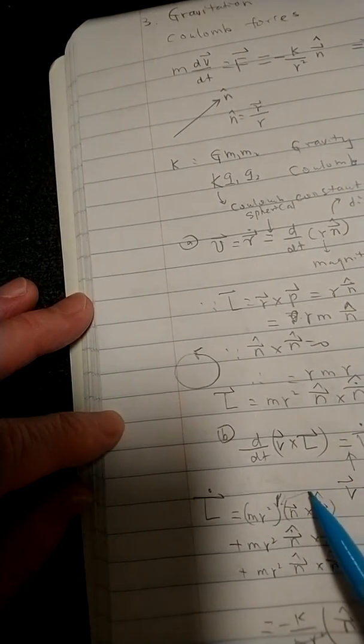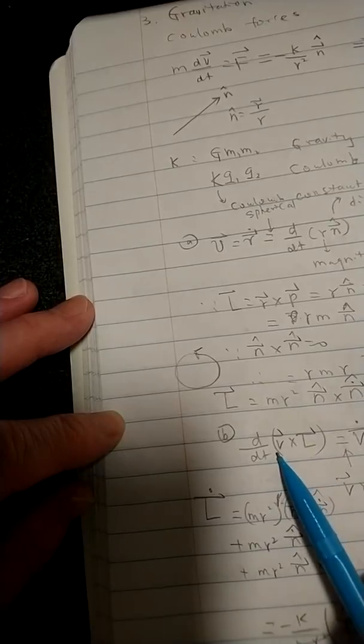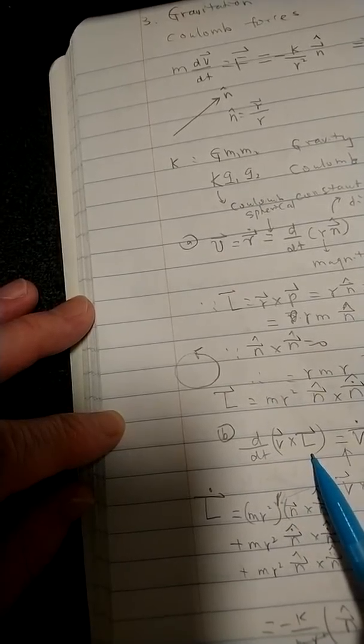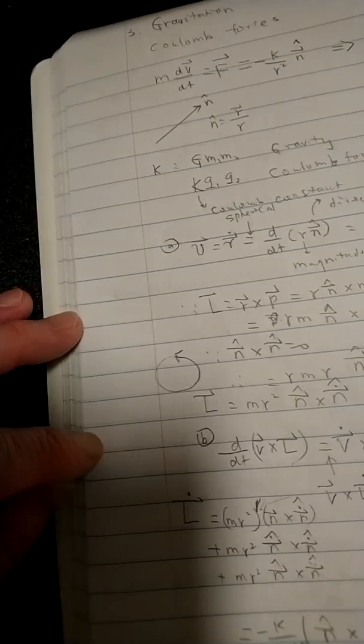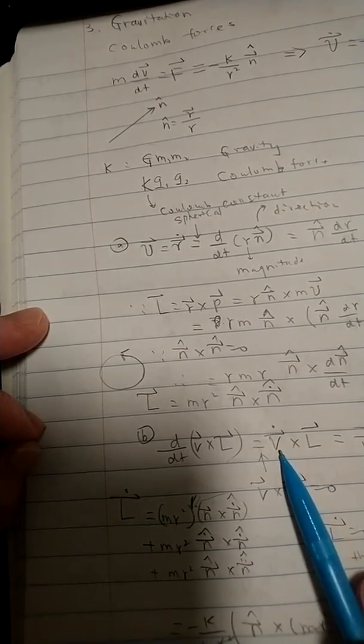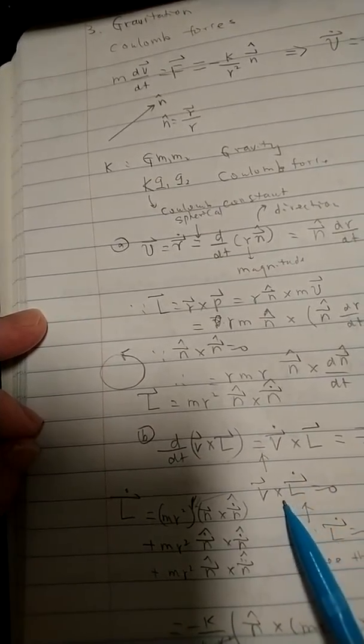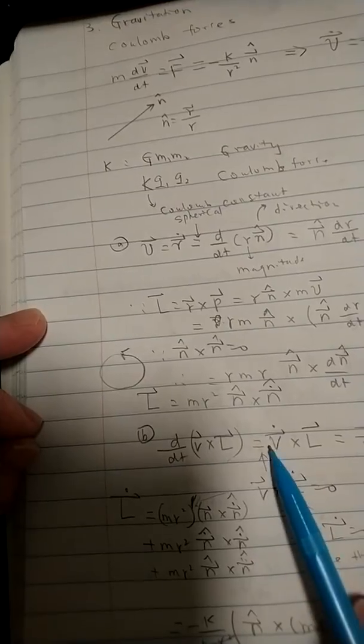What is even more interesting, if you calculate r cross l, which means we calculate the radius cross product with the orbital angular momentum, we will find something which is very interesting. Now, of course, we have these two terms, this term, but now second term is zero. You won't have this term come out. In other words, we are using this one.